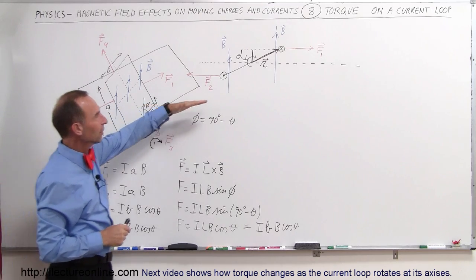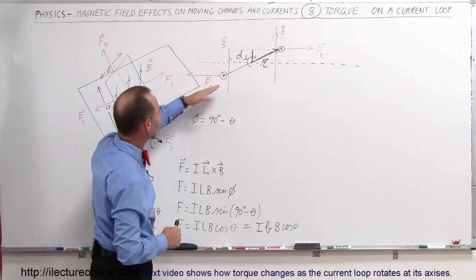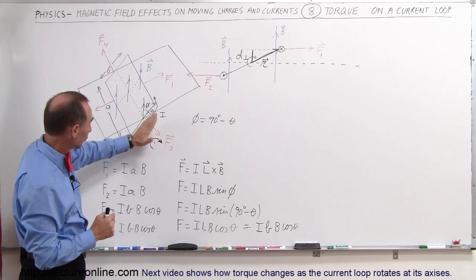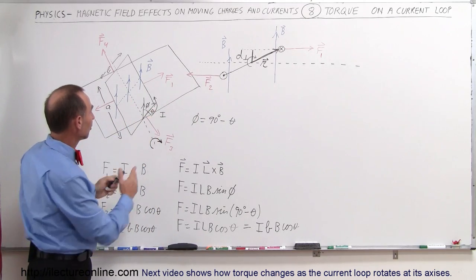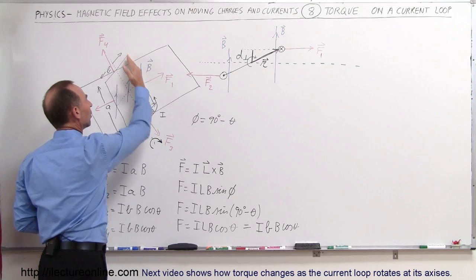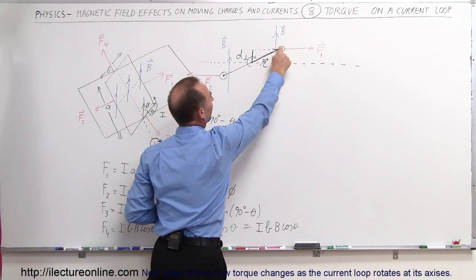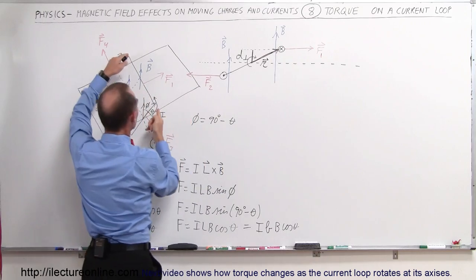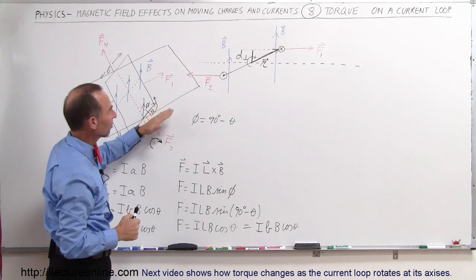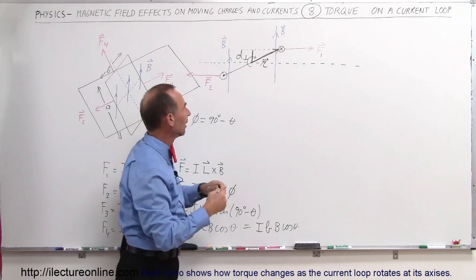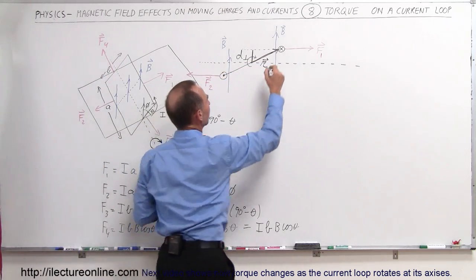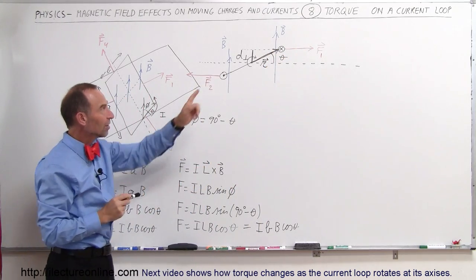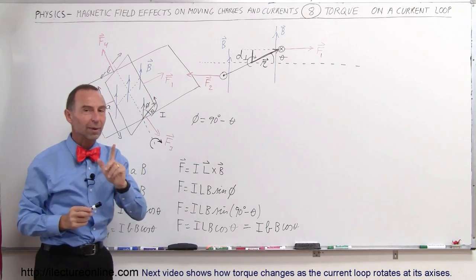We have simulated that very same angle. What we're doing now is we're looking at the current loop from the side, and you can see this part of the loop — that would be this part right here where the current is going into the board. You can see that that section is angled above the plane by an angle theta. So what is the torque caused by F1?